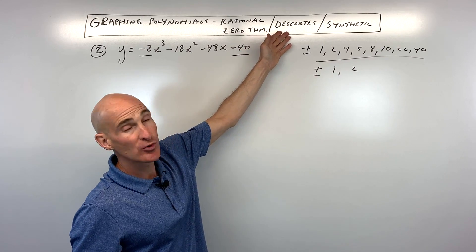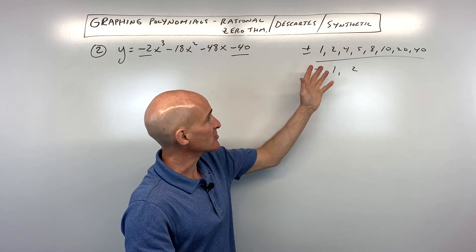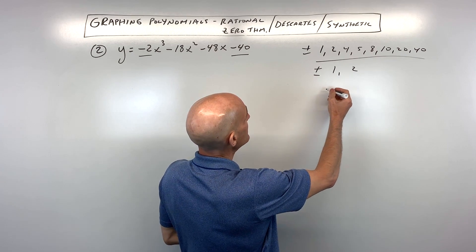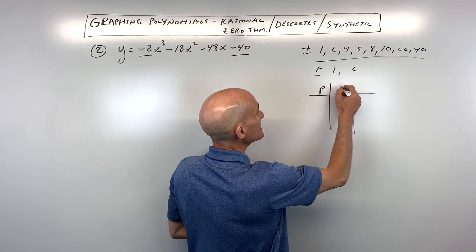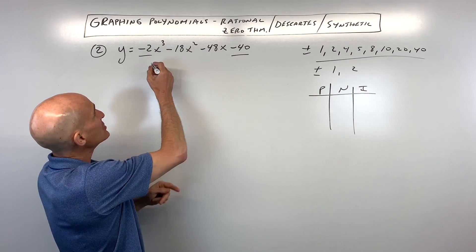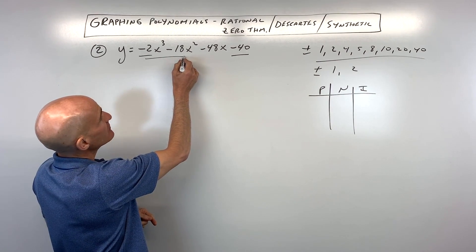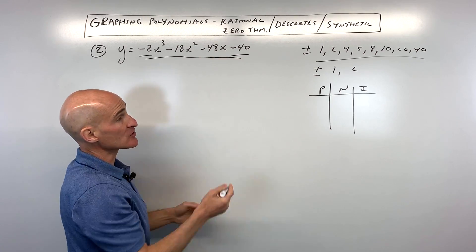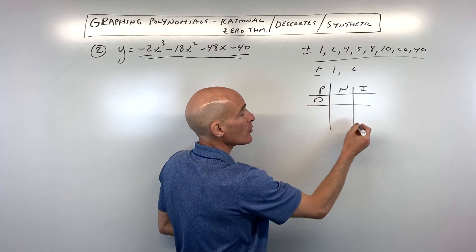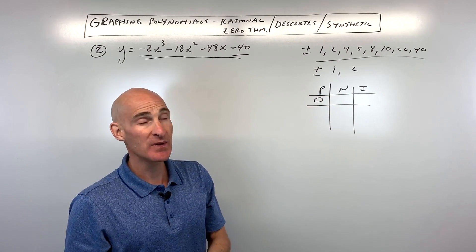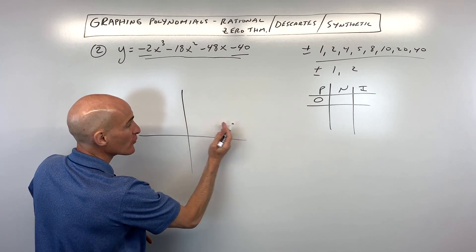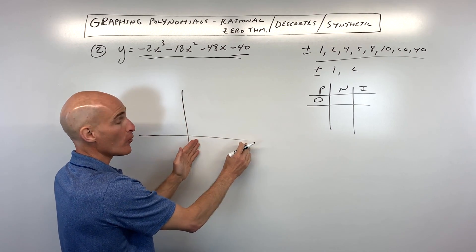Then let's go to Descartes' rule of signs to see if we can narrow down, because there's a lot of possible zeros here. So I would make a PNI chart — positive, negative, imaginary — to get an idea of the possibilities. We check the sign changes: negative to negative, negative to negative, negative to negative. It doesn't change signs at all. So there's going to be a maximum of zero positive zeros, meaning when we go to graph this, it's not going to cross to the right of the y-axis. There are no positive zeros.